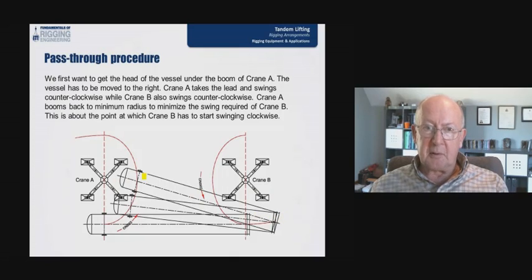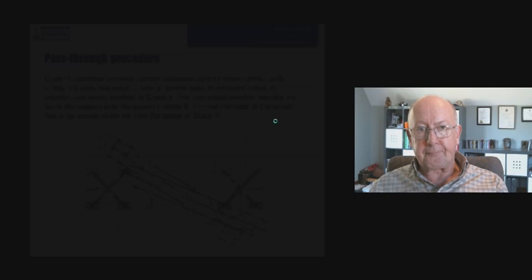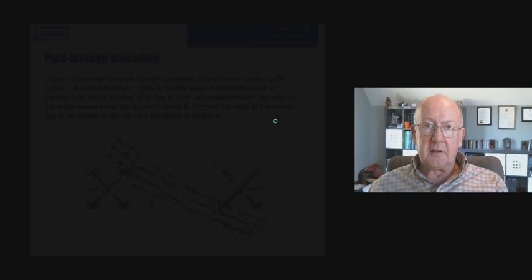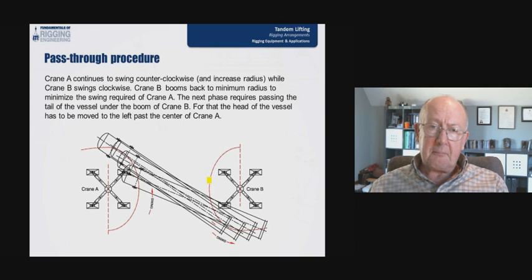Crane A booms back to minimum radius to minimise the swing required of crane B. This is about the point, as shown here, this attitude here, where crane B has to start swinging clockwise. Crane A continues to swing counter-clockwise and increase radius, while crane B swings clockwise. Crane B then moves back to minimum radius to minimise the swing required of crane A.